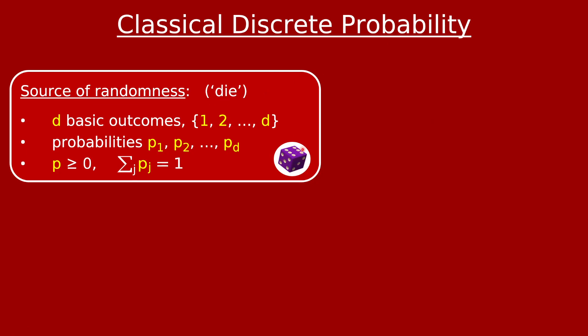The die has some finite number of outcomes — let's call it d. We'll label them 1 through d. These are like the faces of the die. And these have associated probabilities p1, p2, up to pd. These are non-negative numbers that add up to 1. And that's your source of randomness.